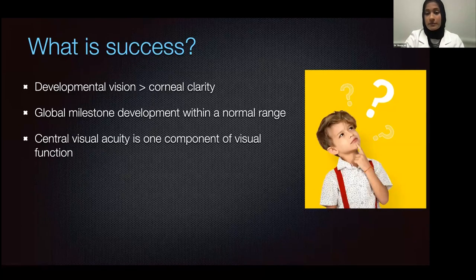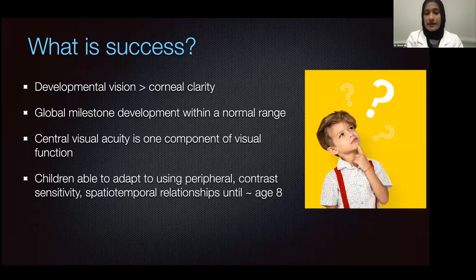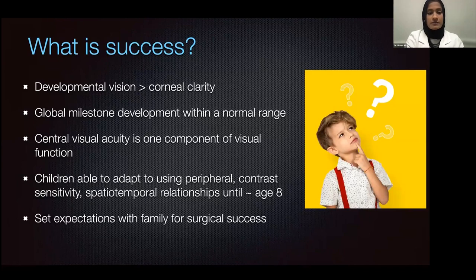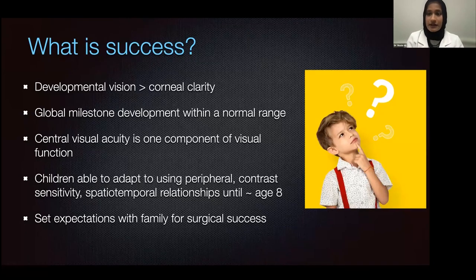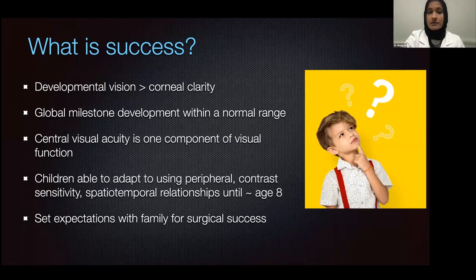Central visual acuity is one component of visual function, but children are really able to adapt well using peripheral cues. They can use contrast sensitivity, and their spatiotemporal relationships develop until about age eight. We do need to make sure that we set expectations for families regarding surgical success. Parents may be looking online at outcomes for adult corneal transplant surgery and expecting certain outcomes. It's really important to have a long discussion that pediatric corneal transplant outcomes are different and will require lifelong treatment and therapy, even for modest improvement in visual quality.